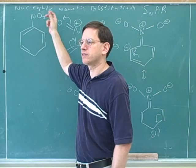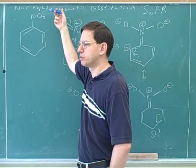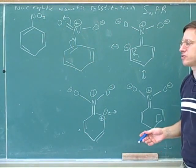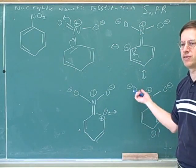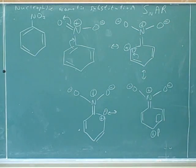A nitro group would have been a meta director for electrophilic substitution, but this is the reverse type of substitution. So on a test, if the instructor keeps going back and forth between the two types of substitution, it's easy for a student to get confused. You have to have those clearly differentiated in your mind.